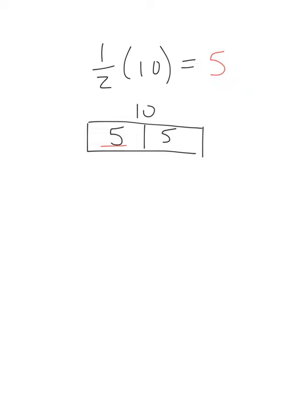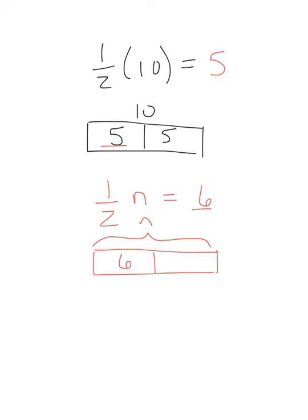Well, we can take that same idea and say, okay, wait a second. Half of what, say n, n is our unknown value. It's our variable. Half of n equals, let's say, 6. Well, again, if we think about the whole bar, so half of n, so the whole bar is n, but half of it is 6. So if that bar is 6 and this bar is the same value of 6, we know n must be 12.